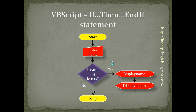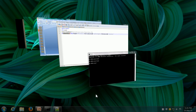Sometimes we do not just have a single statement to execute if the condition is true — we have a number of statements to execute. In this flowchart, the user enters the name, then the condition is checked: if name is greater than 5 letters. If yes, it displays the name and the length, so there will be a couple of message boxes, then stop. If the name is not greater than 5 letters, it does nothing and simply stops. For this, we are going to use the if-then-end-if statement.